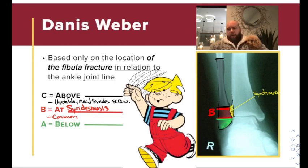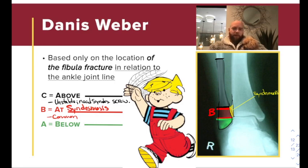If that happens, what's holding the fibula or the lateral malleolus in place to keep the talus under the tibia? Nothing. So if you see a Weber C, it's an unstable fracture that needs to be surgically fixed. Other than that, that's pretty much it — just Weber A, B, and C. Thank you.